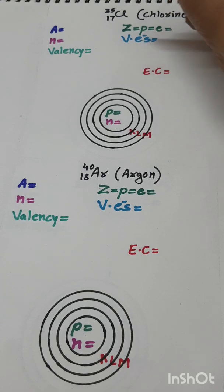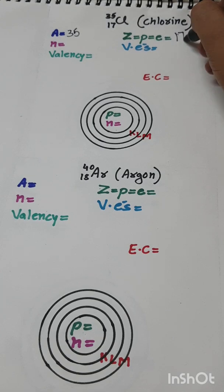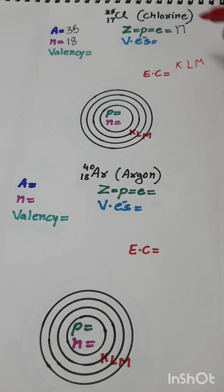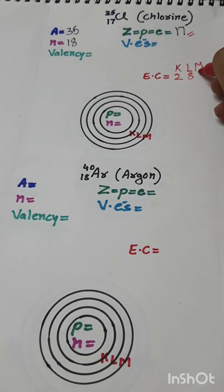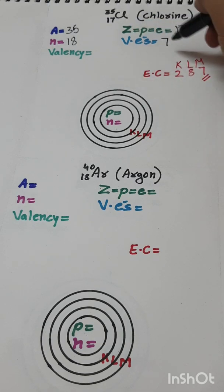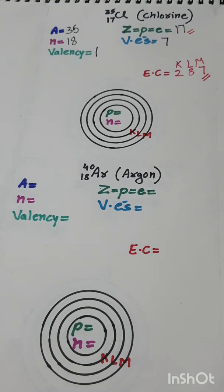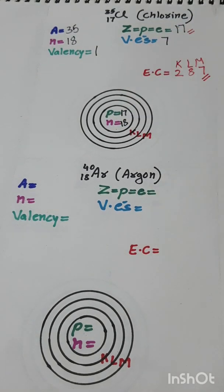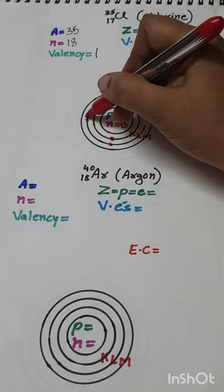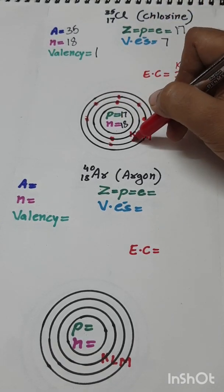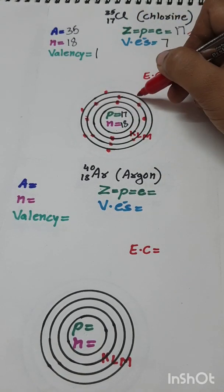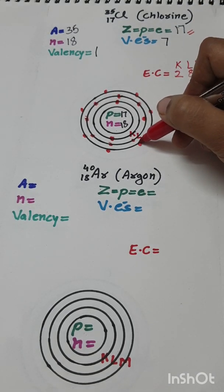Chlorine: A = 35, Z = 17, n = 35 − 17 = 18. Electronic configuration — K shell: 2, L shell: 8, leaving 7 electrons for the M shell. EC is 2, 8, 7. The outermost M shell has 7 valence electrons, so valency = 8 − 7 = 1. Number of protons = 17, number of neutrons = 18.